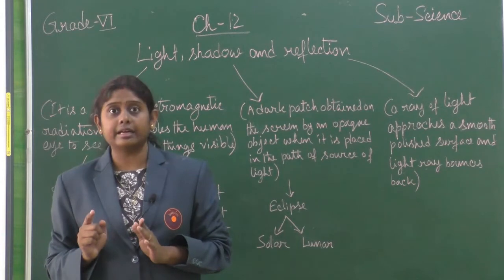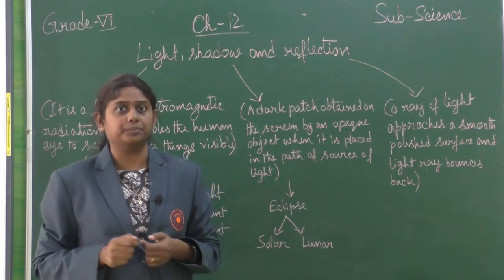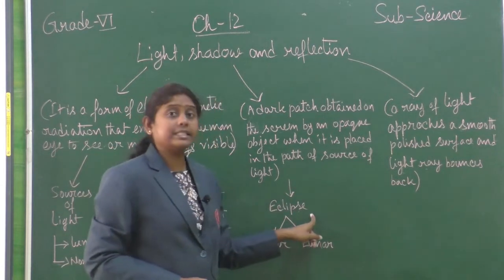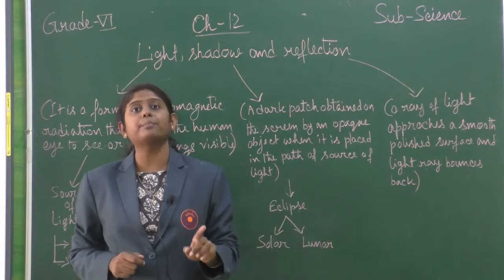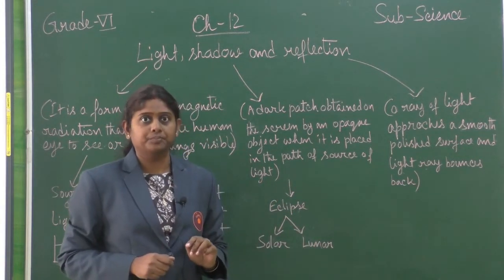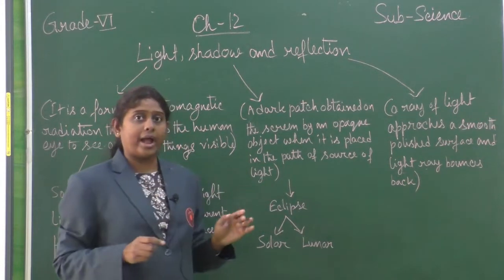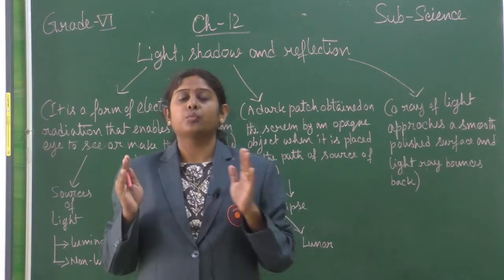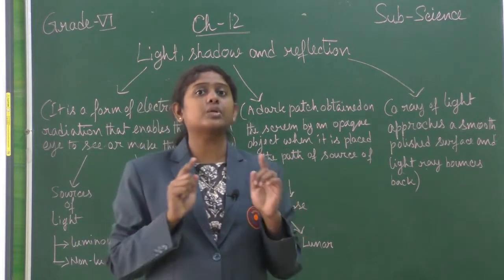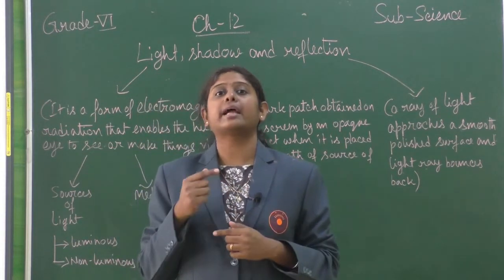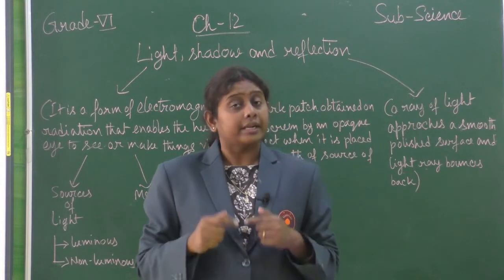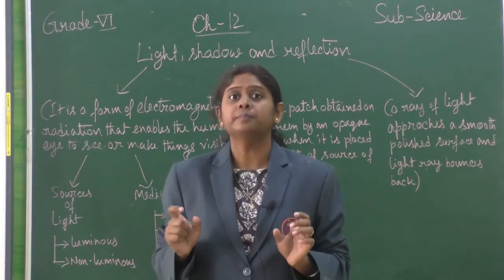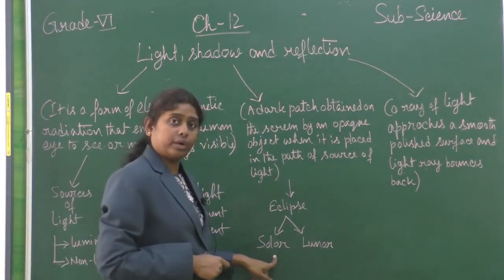Now, eclipse, which is a natural example of shadow. Eclipse occurs when the sun, the earth, and the moon come in one straight line. At that time we can see the eclipse. Depending on the positions of the earth and the moon, there are two types of eclipse.